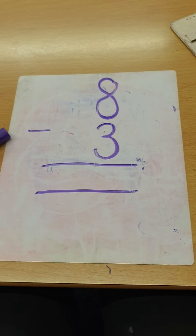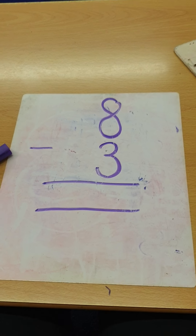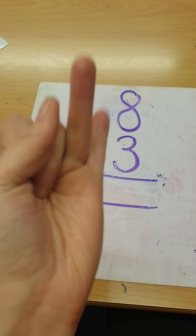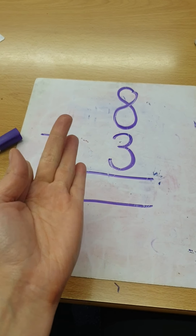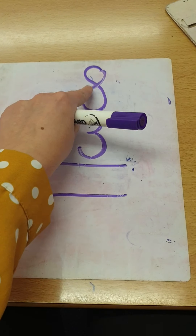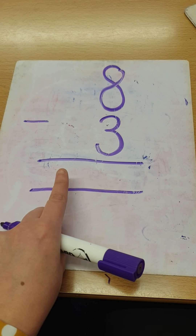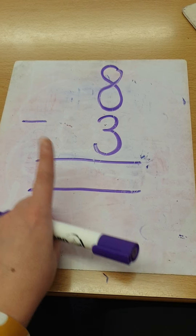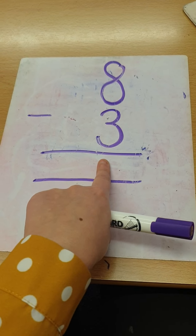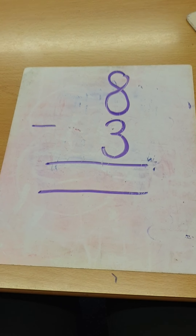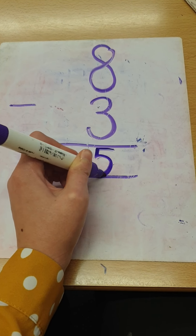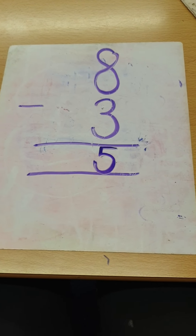Let's check together. I'm going to put eight in my head, take away three. Seven, six, five. You were right, well done. So where do I put my five ones — do I put it here or in the ones column? Fantastic. We put it in the ones column because eight and three are our ones numbers.